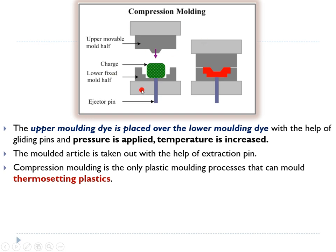This process is used for thermosetting plastics. You cannot use injection molding for thermosetting plastics, so if you want to mold a thermosetting plastic like bakelite, you use compression molding. The upper molding die is placed above the lower molding die with the help of sliding pins, pressure is applied, and temperature is increased.